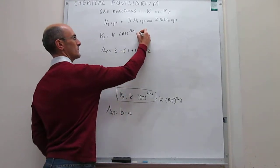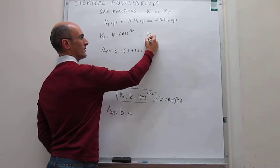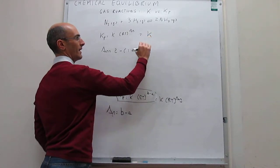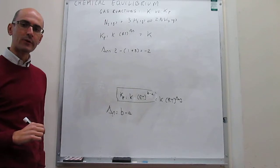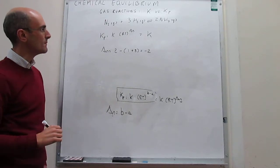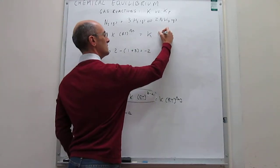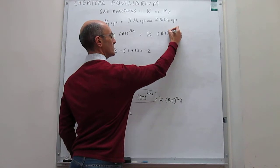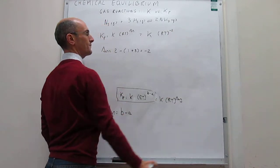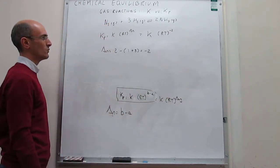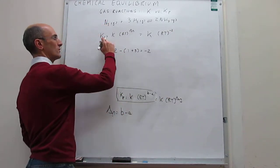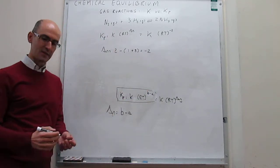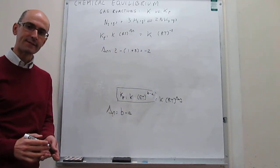The expression becomes: K_p = K × (RT)^(−2). Remember that K here is the one expressed in terms of molar concentrations. That is how you convert from K to K_p for the synthesis of ammonia in the gas phase.